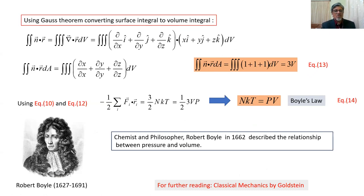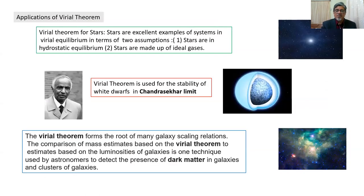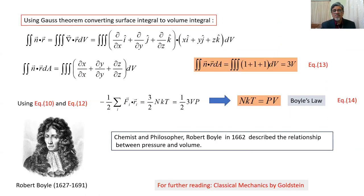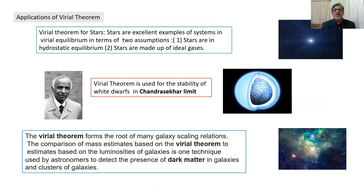This is a picture of Robert Boyle. The chemist and philosopher Robert Boyle in 1662 described the relationship between pressure and volume. For further reading, we suggest referring to the book Classical Mechanics by Goldstein.